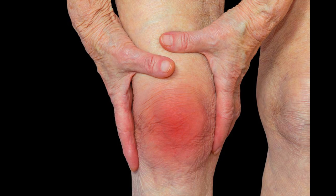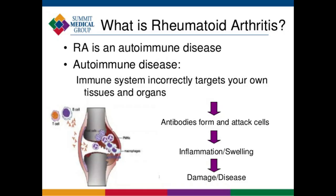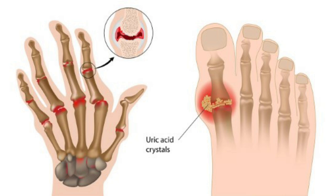Rheumatoid arthritis is basically an autoimmune condition where the body is damaging its own tissue — the body is essentially fighting against its own tissues — and it causes the same symptoms.